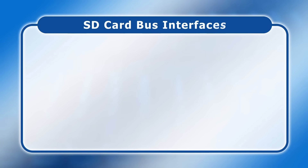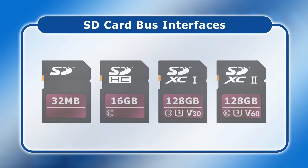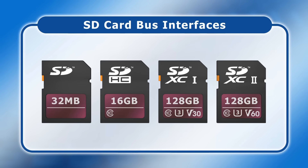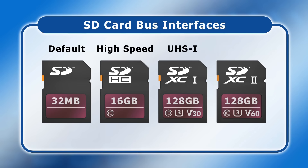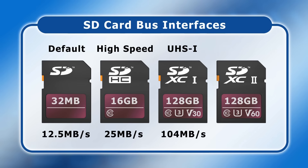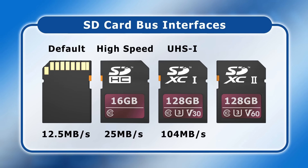Today, nine official SD bus interface standards have been specified by the SD Association. These relate to the speed of the electronics and the physical connection pins used to transfer data, and are a hardware specification quite distinct from an SD card's speed class. The first three official bus interface standards – Default Speed, High Speed, and UHS-1 – transfer data at a theoretical maximum of 12.5, 25, or 104 megabytes per second, and do so using the single row of pins.